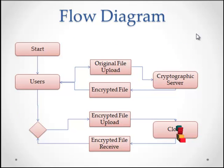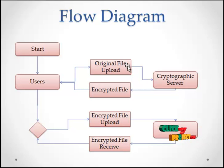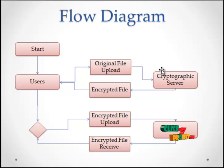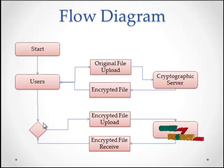This diagram represents the flow of our project. There is a user who will send a list of group members to whom to send the file, along with the original file. The user will upload the file to the cryptographic server, which will encrypt the file using an ACL access control list and a key from the user, and send the encrypted file back to the user. Then the user will send the encrypted file to the cloud.